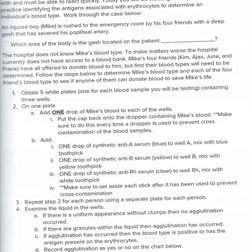The in-person lab uses synthetic blood — not real blood — with a scenario about Mike going to the hospital. The hospital doesn't have a blood bank, but Mike has four friends who've offered to donate blood. In the lab you'd take blood from Kim, Ajax, June, Frank, and Mike to see whose blood type matches Mike's.